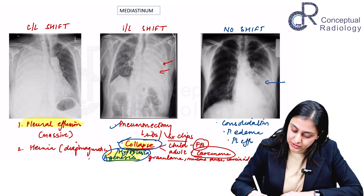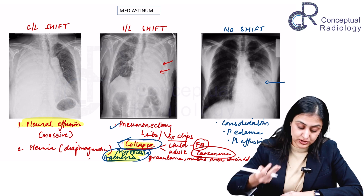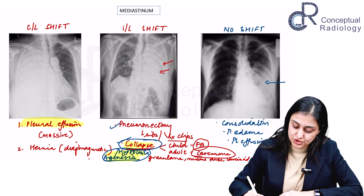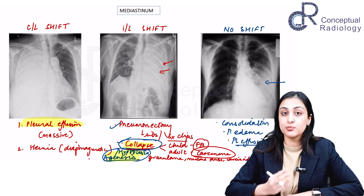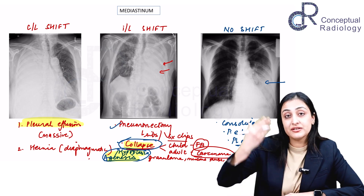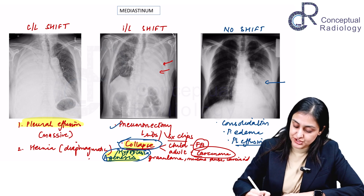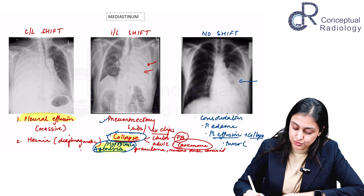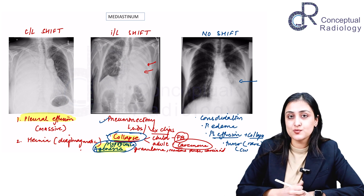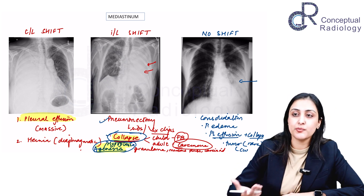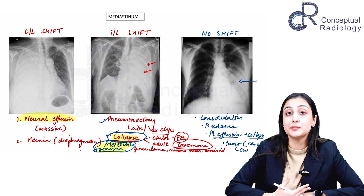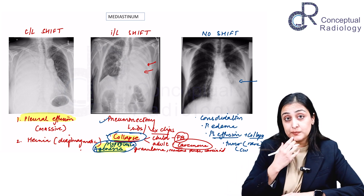Another possibility to rule out on ultrasound is a pleural effusion completely opacifying the hemithorax with an associated component of secondary collapse — one force pushing and one pulling, keeping the mediastinum in place. Very rarely, a large tumor — more commonly in the chest wall than the lung — may occupy the entire hemithorax, appearing opaque with no mediastinal shift.